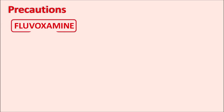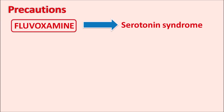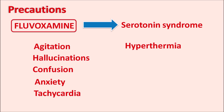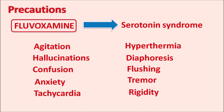One important precaution is that, like other antidepressants, fluvoxamine can produce serotonin syndrome. This syndrome is associated with excessive levels of 5-HT within the CNS, resulting in symptoms such as increased agitation, hallucinations, confusion, anxiety, tachycardia, hyperthermia, diaphoresis, flushing, tremor, and muscle rigidity.